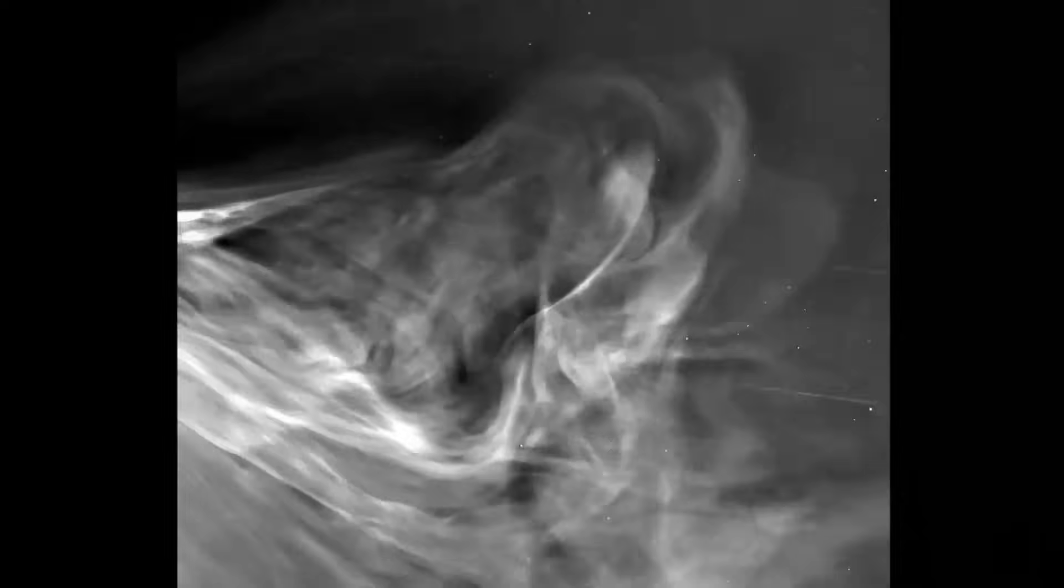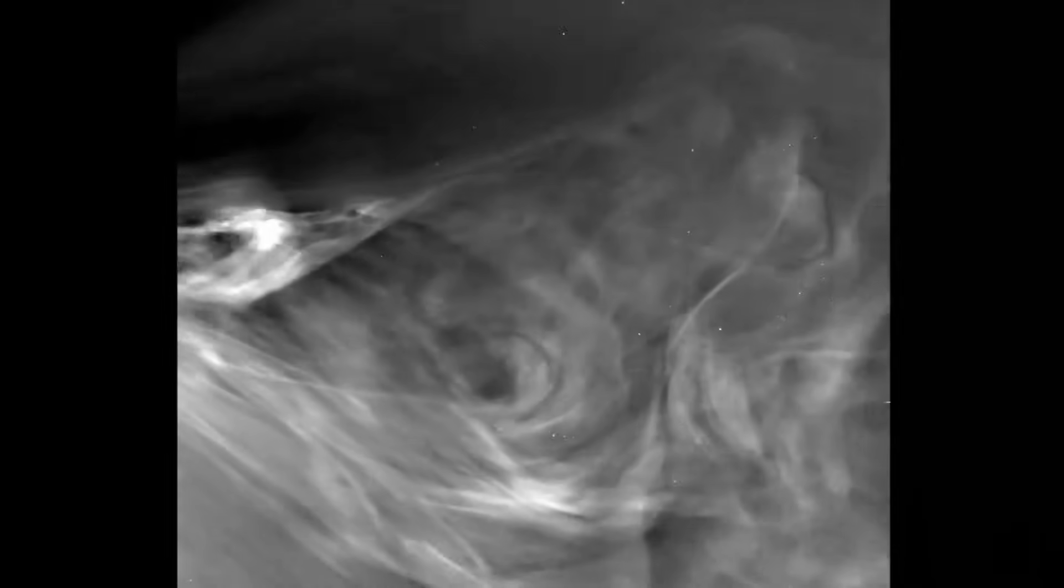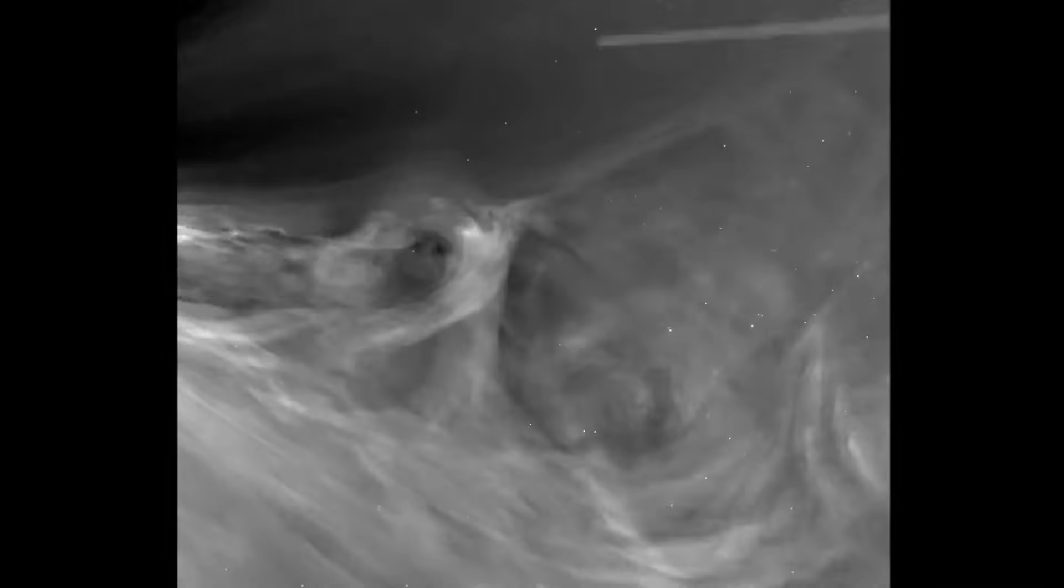These images reveal previously unseen details at the origin of the solar wind. The amount of clarity and the amount of details that we got from Parker Solar Probe is totally unprecedented. But also, we see phenomena that you didn't really see before, and that's where the fun begins. If you look closely, you can see key features in the images.